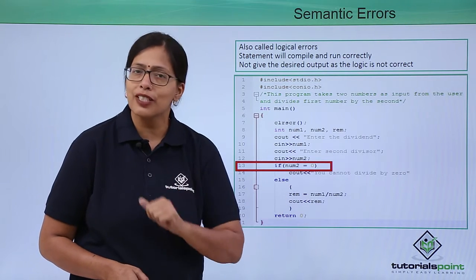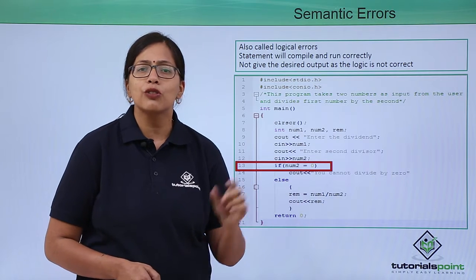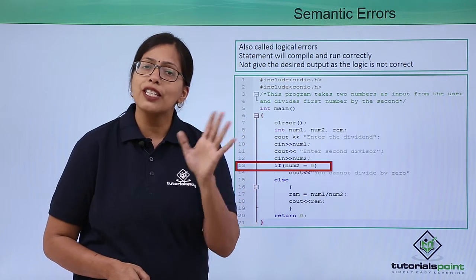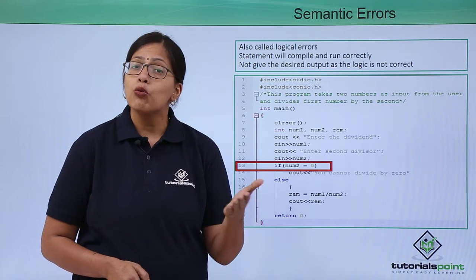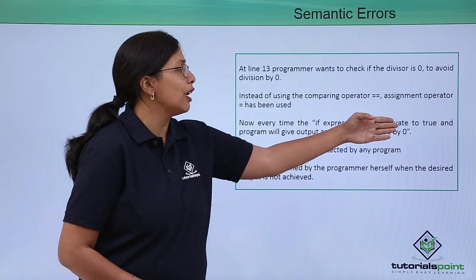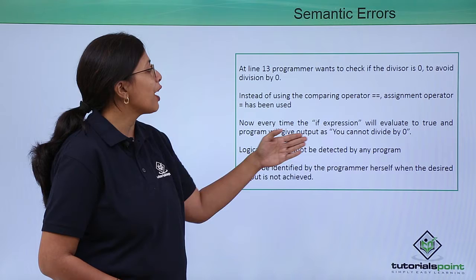So every time the value of the second number will become zero. Now every time the if expression will evaluate to zero because num2 is always zero, and the program will give output as 'you cannot divide by zero'.